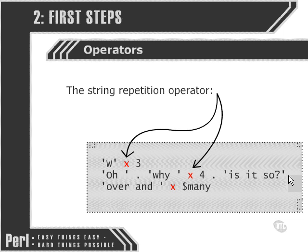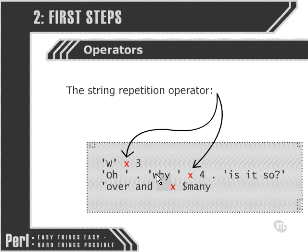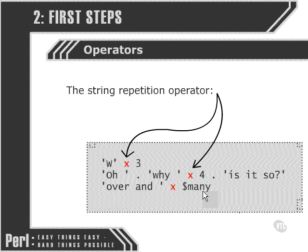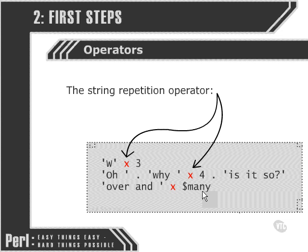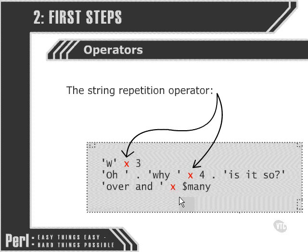We can happily mix operators within certain parameters and Perl will return the appropriate response — so it just repeats the nearest value that it finds. We can also use a variable to specify the number of times to repeat the string, though that variable would have to be set to a numeric value for the code to make sense. So those are the basic operators: all the numeric ones, plus the full stop string concatenation operator to join two strings together, and the string repetition operator — the letter x — which repeats a string as many times as we specify.